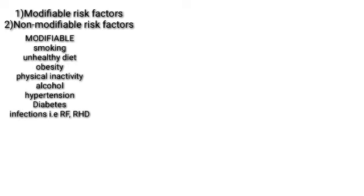Examples of modifiable risk factors include tobacco use and exposure to tobacco smoke — if this predisposes an individual to a cardiovascular condition, we can advise that patient to stop, so it is modifiable. Other examples include unhealthy diet, overweight or obesity, and physical inactivity, meaning the person doesn't exercise.